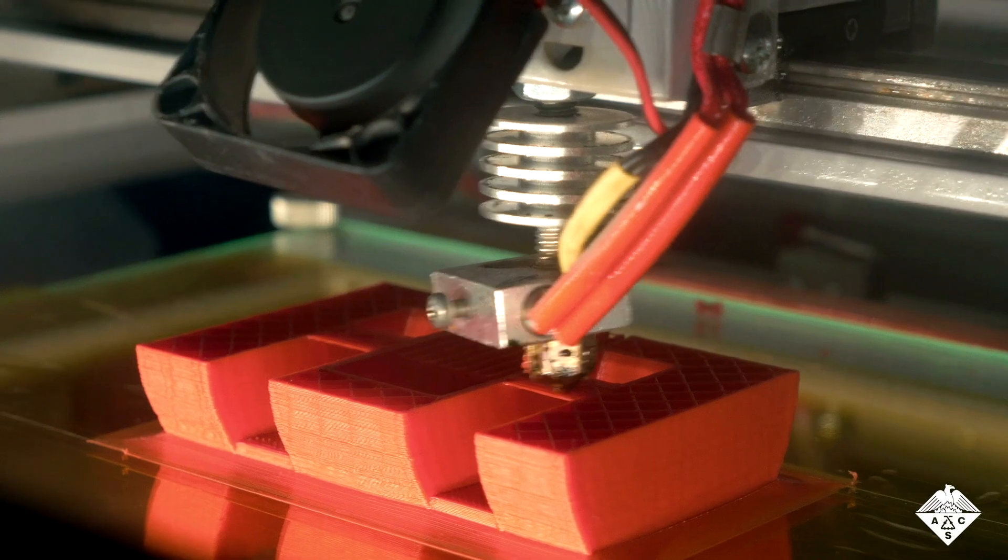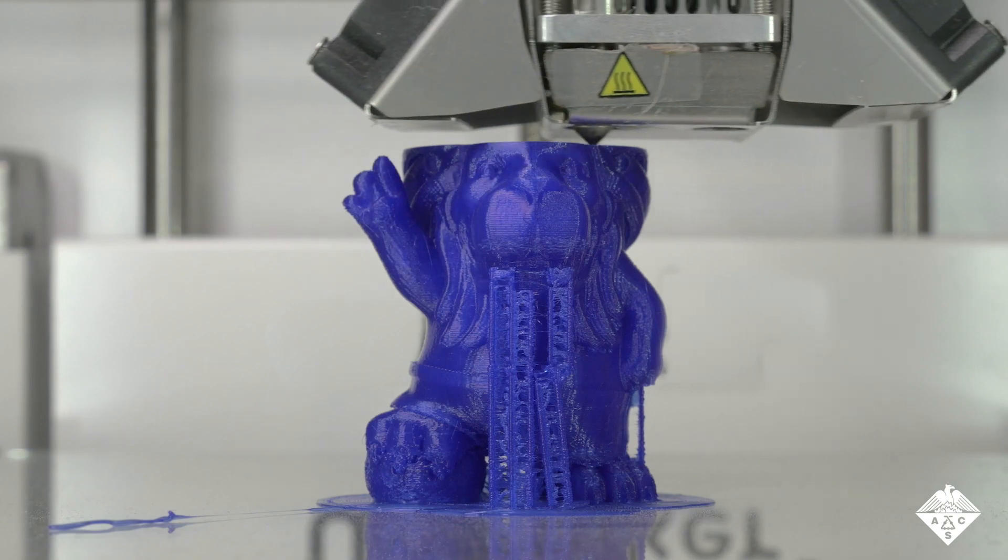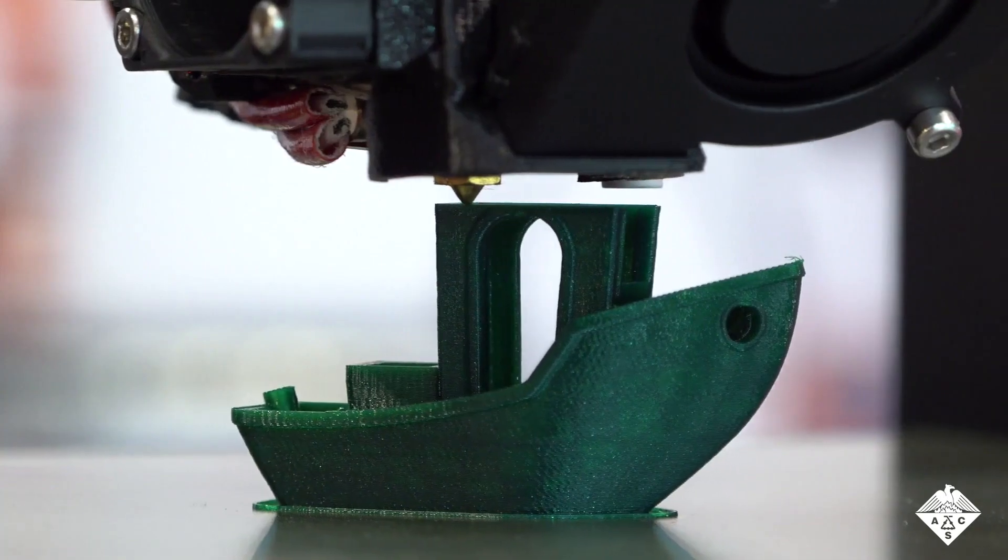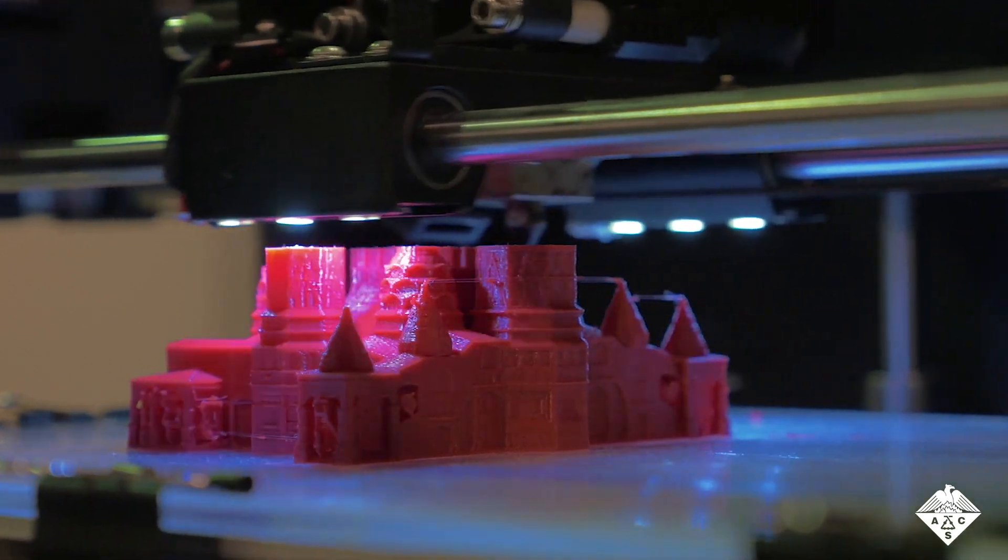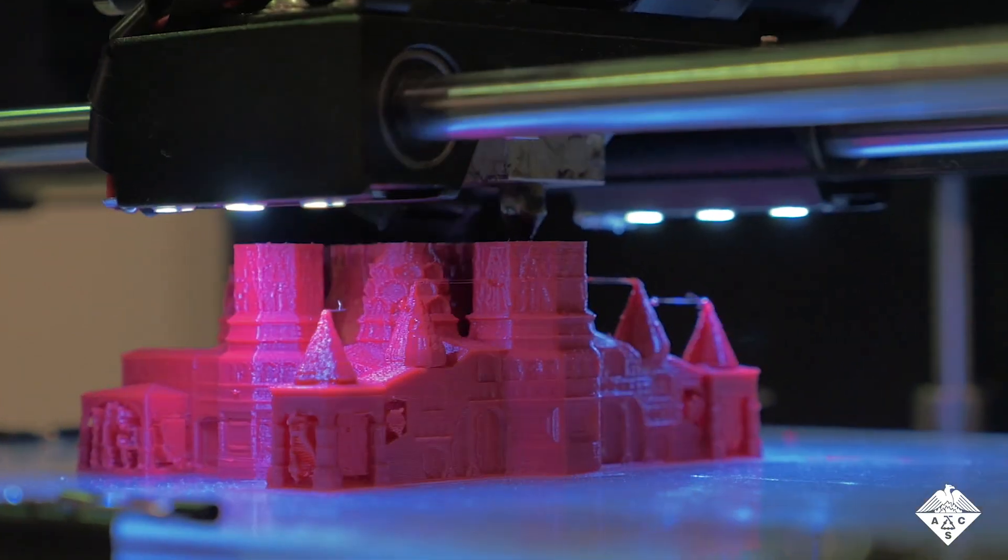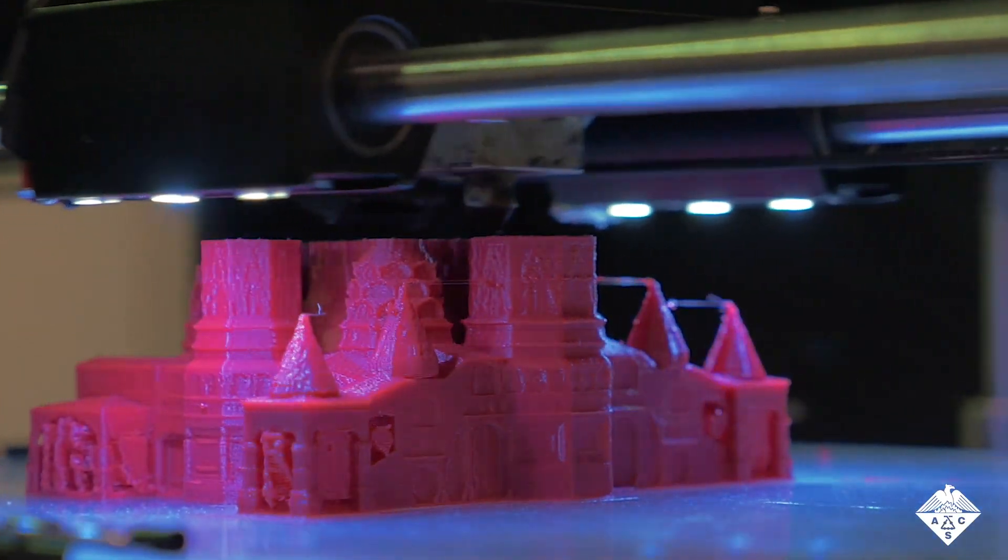A type of 3D printing called stereolithography creates objects layer by layer. After the printer deposits each layer of light-sensitive ink, it exposes the material to a pre-programmed pattern of light, locking the object into the desired shape.